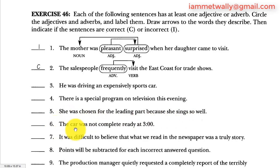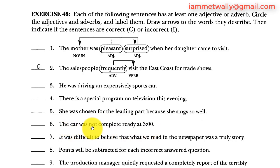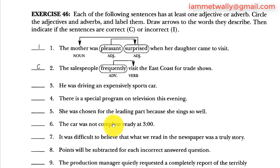Number six: 'The car wasn't complete ready at three.' The car is the subject, wasn't is the verb. Complete is an adjective and ready is an adjective — two adjectives can't work together here because they don't describe anything. It should be wasn't completely ready. Complete should be changed to an adverb because it's followed by an adjective, and an adjective cannot describe another adjective. So number six is incorrect.